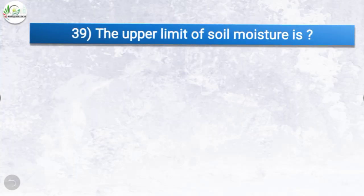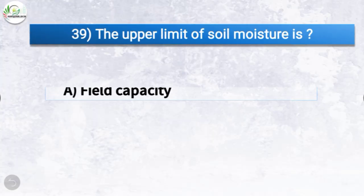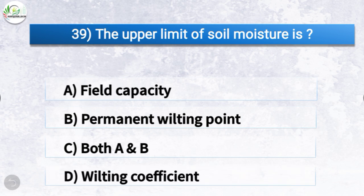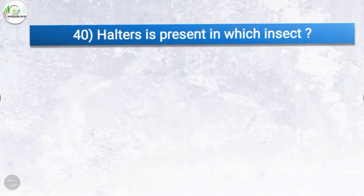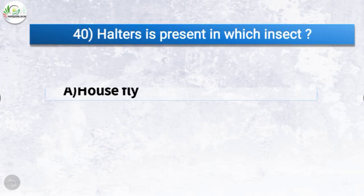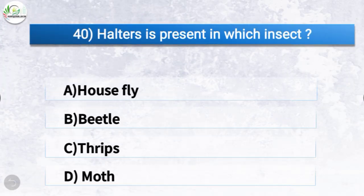Question number thirty-nine: the upper limit of soil moisture is what? The options are field capacity, permanent wilting point, both A and B, or wilting coefficient. The correct answer is option A, field capacity. So the upper limit of soil moisture is field capacity. Question number forty: halteres are present in which insect? The options are housefly, beetle, thrips, or moth. The correct answer is option A, housefly. So halteres are present in housefly.